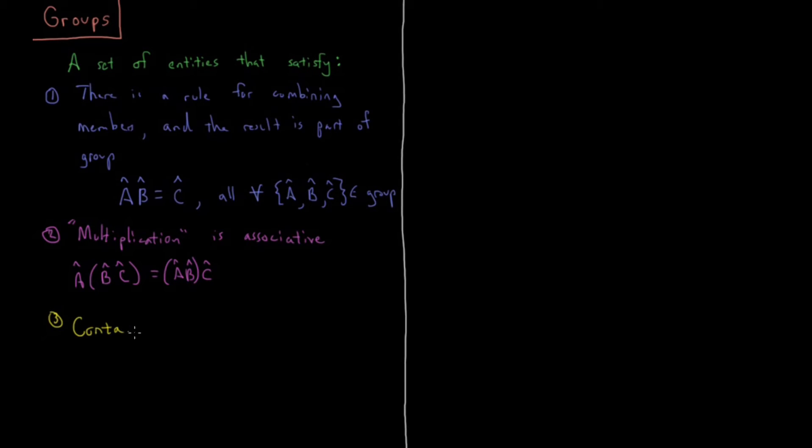Three, it contains an identity element. So this is why we have the identity operation, this is why we have the identity element, this is why it's important to have the identity, even though it seems trivial, is that it's necessary to satisfy the condition of being a group. So in that case, what we have is something like the identity multiplied times any given operator is just that operator itself. And that will be true for all operators which are members of the group.